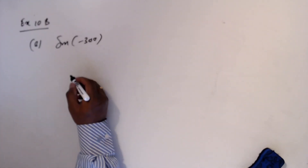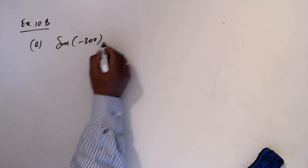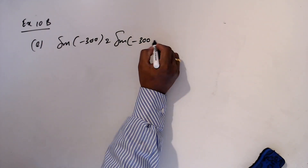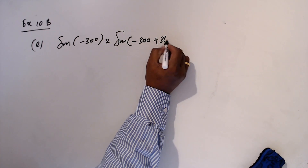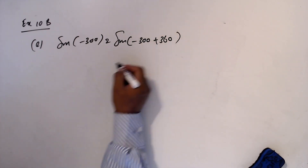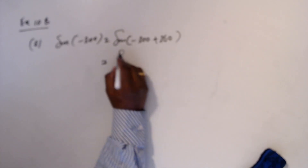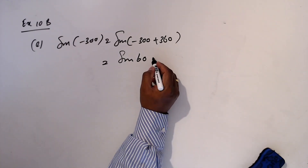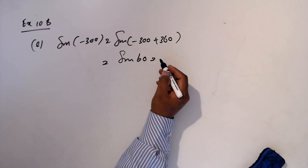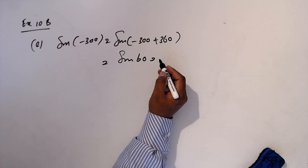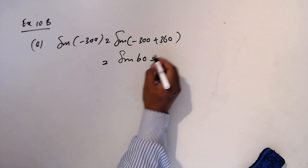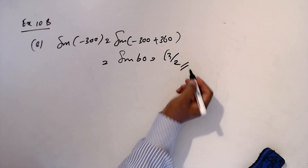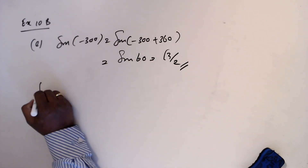E: sine minus 300 equals sine(minus 300 plus 360), which is sine 60 again. Sine 60 is square root 3 over 2.